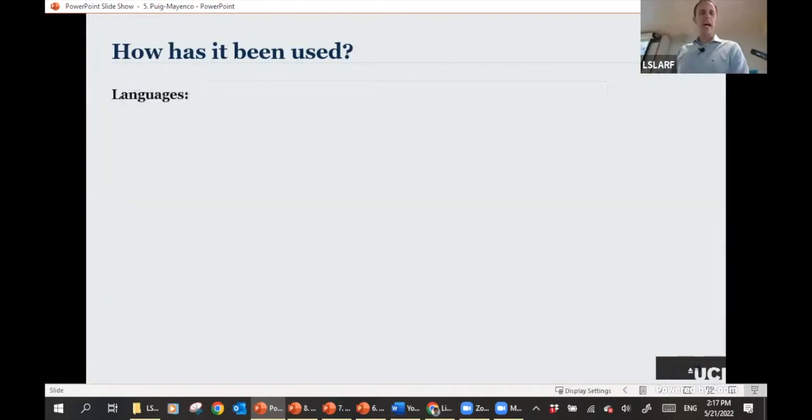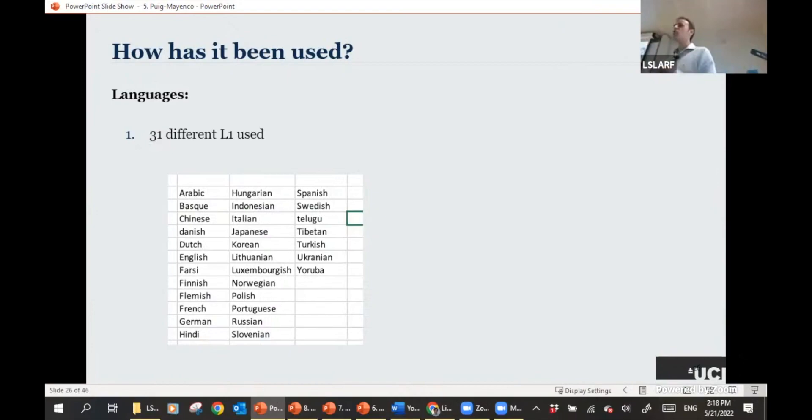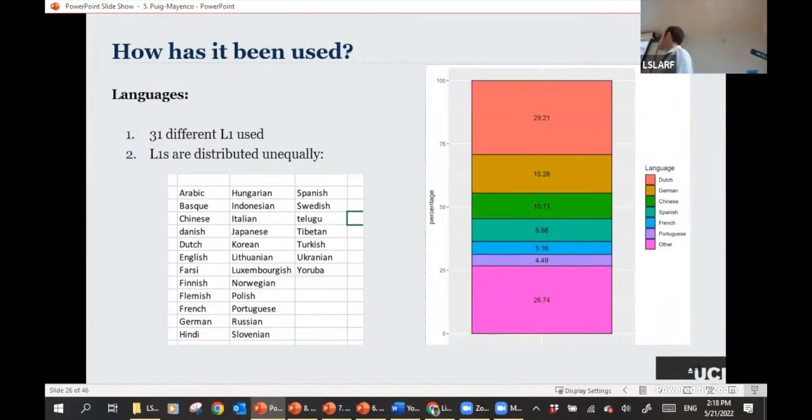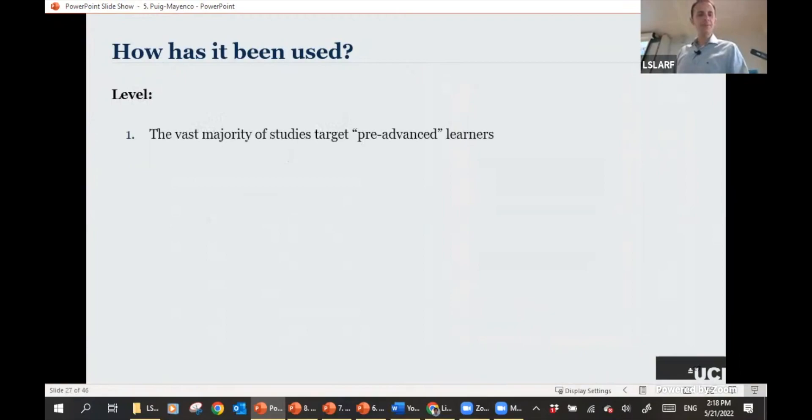The languages that have been used, the LexTALE has been used with 31 different L1s, so quite a variety of languages. You've got the examples here: Arabic, Basque, Chinese, Dutch, so on and so forth. And crucially, however, the L1s are not equally distributed. What we do see is that there's almost 30% of studies that have used L1 Dutch, perhaps not surprisingly. Then we've got German, Chinese, Spanish, French, Portuguese, and then all the other languages. So there is a clear bias towards Indo-European languages, perhaps with the exception of Chinese there. But I guess that we need much more studies here.